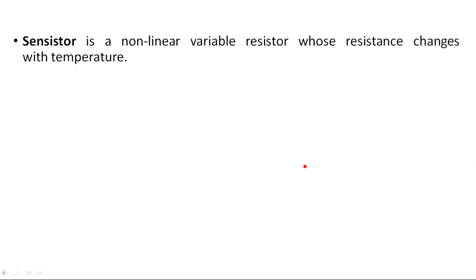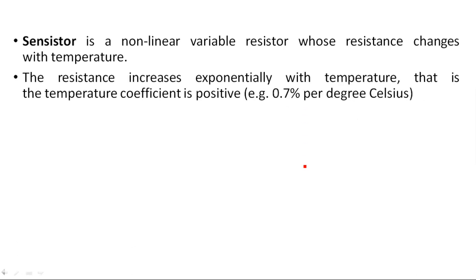Since the Sensister is a non-linear variable resistor, its resistance changes depending on temperature variations. The resistance increases exponentially with temperature — the temperature coefficient is positive at 0.7 percent per degree Celsius. For example, a one degree Celsius increment in temperature causes a 0.7 percent increment in the resistance value, giving an exponential relation between resistance and temperature variation.